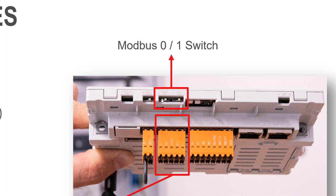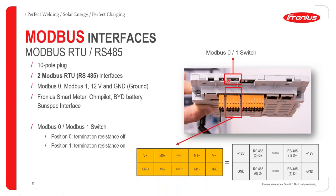Switching from position 0 to position 1 activates the Modbus terminal, making it ready for connection to a Smart Meter, the Ohm Pilot, and the BYD battery — which is the currently compatible battery for the Fronius Gen24 Plus.